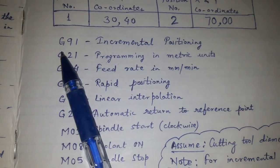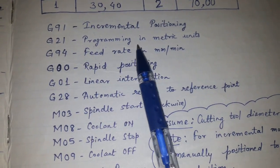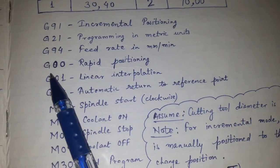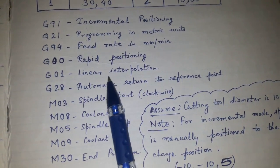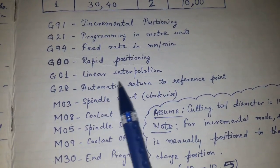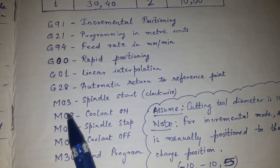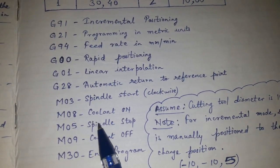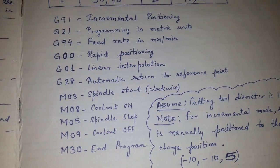The codes used in this program are: G91 for incremental positioning, G21 for programming in metric units, G94 for feed rate in mm per minute, G00 for rapid positioning, G01 for linear interpolation, G28 for automatic return to reference point, M03 for spindle start clockwise, M08 for coolant on, M05 for spindle stop, M09 for coolant off, and M30 for end of program.